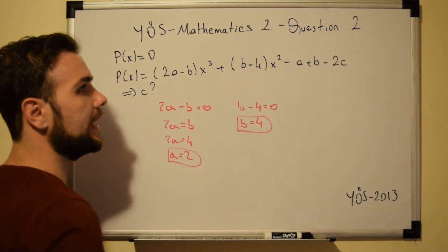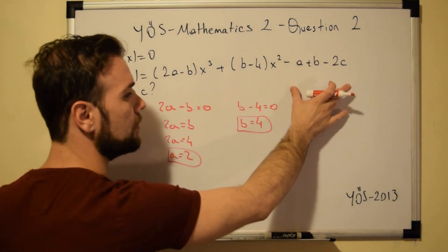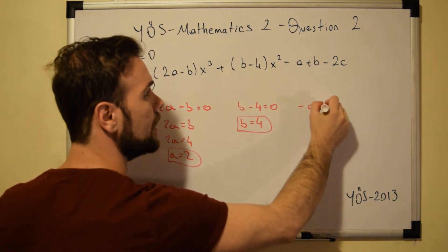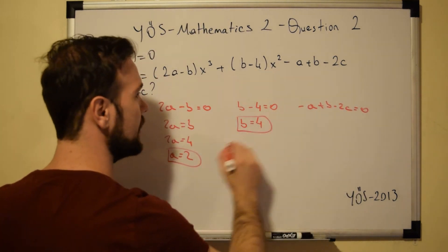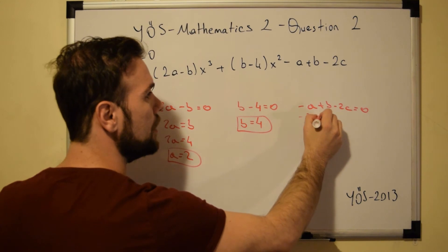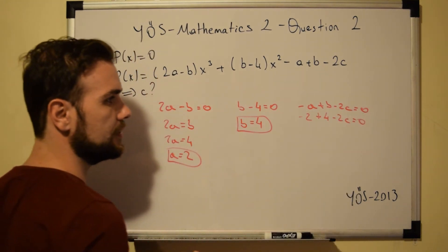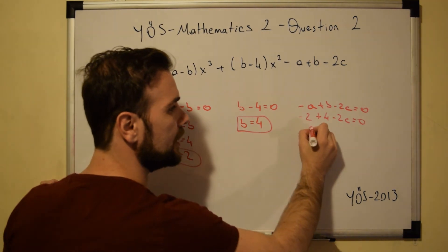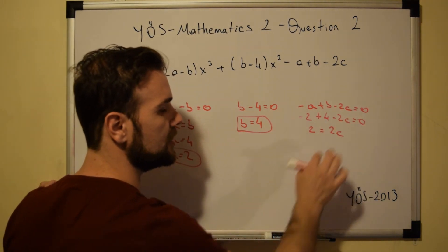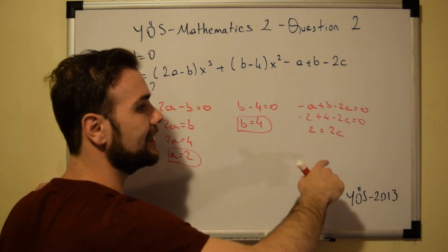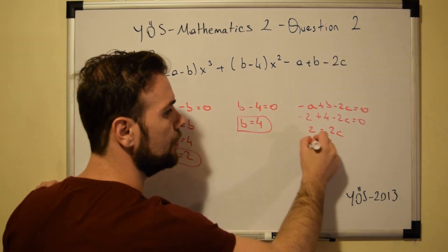Now we have found the values of A and B, so it's time to find the value of C. We set the constant term equal to 0: minus A plus B minus 2C equals 0. Substituting minus 2 for A and 4 for B: minus 2 plus 4 minus 2C equals 0, so 2 equals 2C. Therefore C equals 1.